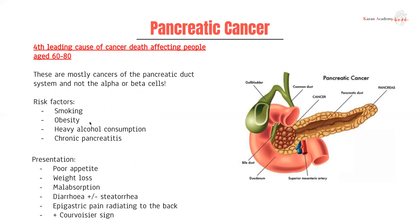Now, pancreatic cancers are the fourth leading cause of death and typically affect people aged between 60 to 80. These cancers are mostly cancers of the pancreatic ductal system and not the alpha or beta cells — those would be called insulinomas or glucagonomas. Risk factors include smoking, obesity, heavy alcohol consumption, and chronic pancreatitis, all contributing to low-grade inflammation. It presents with diarrhea and steatorrhea — because if you can't secrete lipase, you have excessive levels of fats leaking out through the stools.